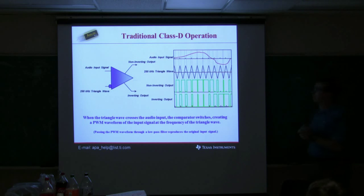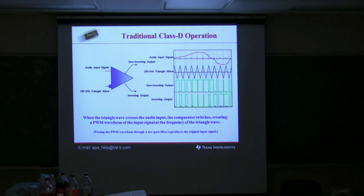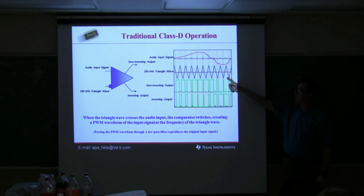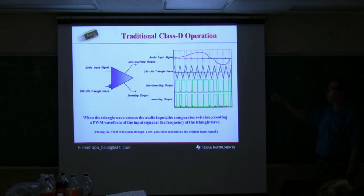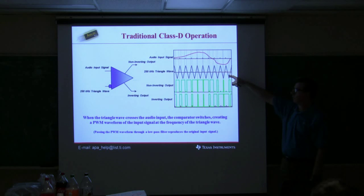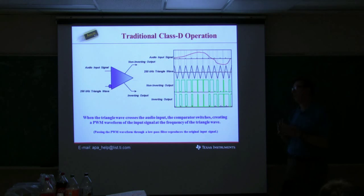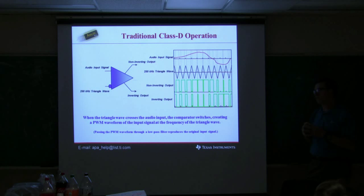Question: where is the triangle wave being produced from? That's a very good question — it's actually very tricky because if there's any distortion on the triangle wave, it's going to corrupt the audio. We spend a lot of time making circuits that reproduce this triangle wave very accurately with very good linearity so that we don't introduce any distortion. The oscillator for that is always inside our chips.